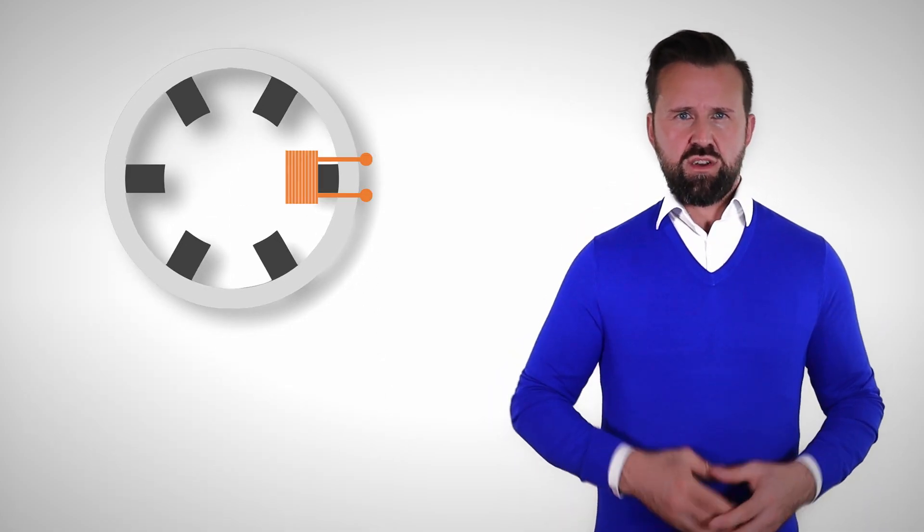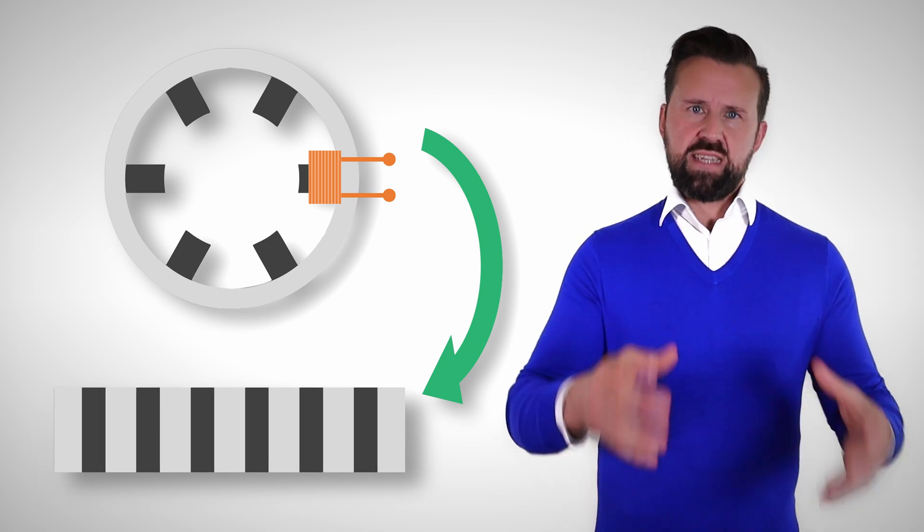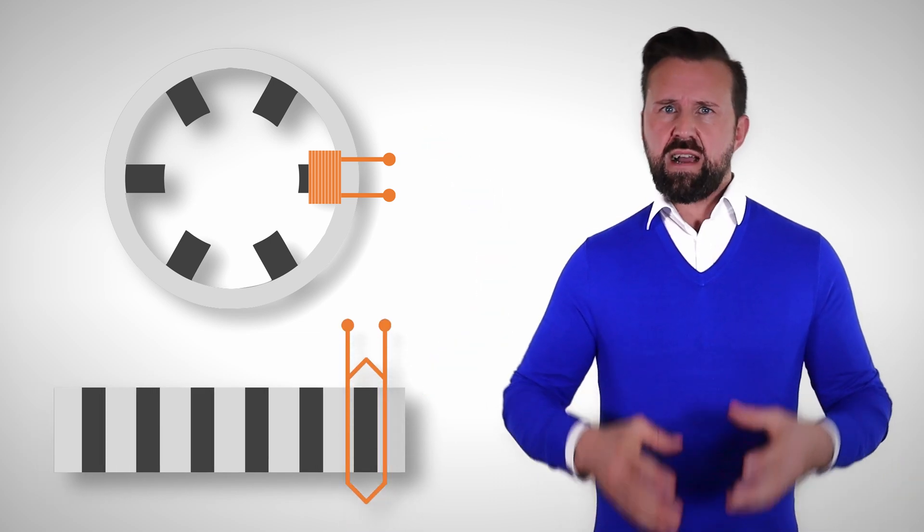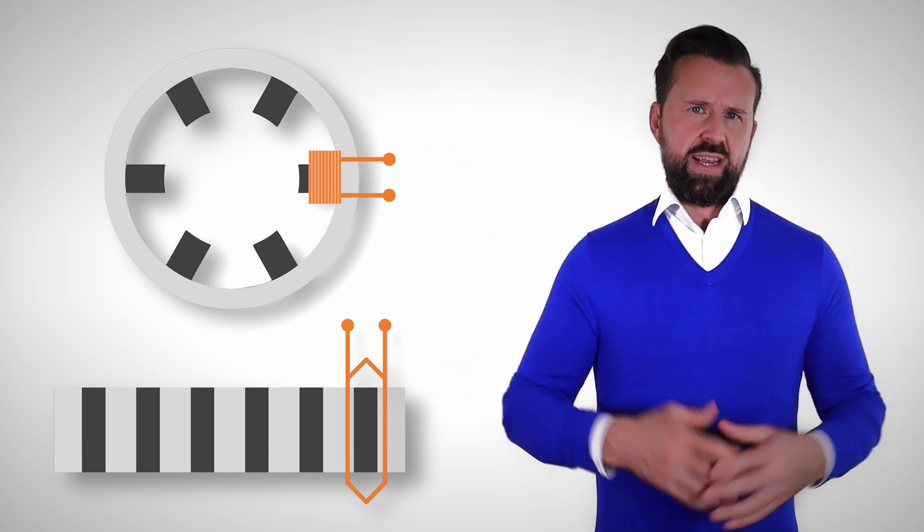Here you can see the transformation of the round stator into a simplified view. The dark gray are the stator teeth and the windings are wound around them. The light gray is the stator back ring and the orange are the windings.